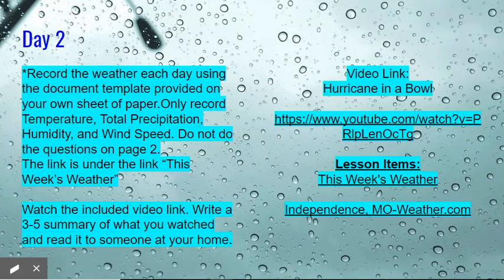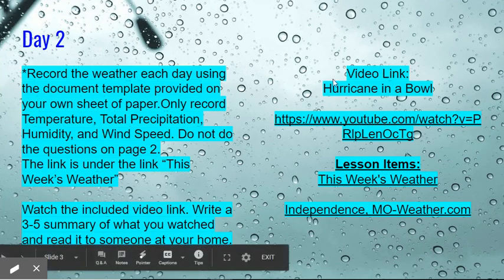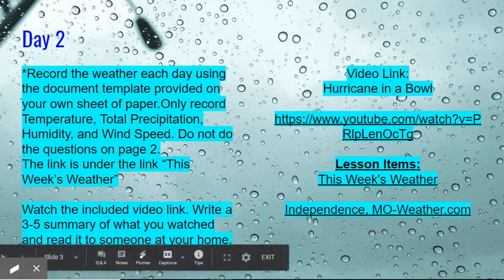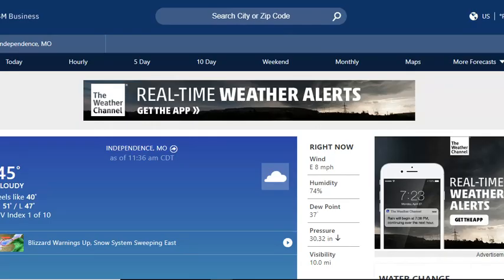Remember we just want you to record temperature, total precipitation, humidity, and wind speed. Do not worry about doing the questions on page two. The link to find your weather page again is over here to the right where it says independencemo-weather.com. If you click on it, it will take you there and you can record your measurements.